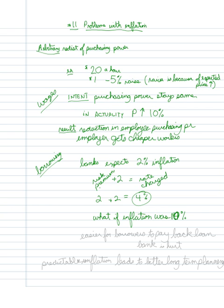Then it becomes easier for borrowers to pay back loans and the bank is hurt. Which is why banks actually like making loans where they can adjust the interest rate, what we call adjustable rate mortgages, because they want to be able to adjust the interest rate over time.